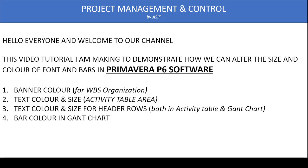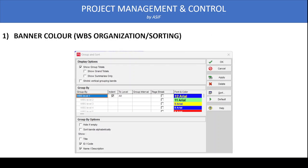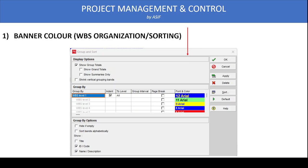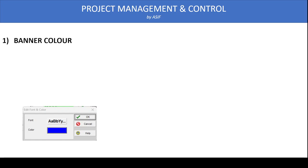Let's look at this in a little more detail. First is the banner color, which we use for WBS organization and sorting of data in Primavera. When we need to modify the font color and size, we go to the Group and Sort dialog box, select the required WBS label, and double-click on the font and color option.